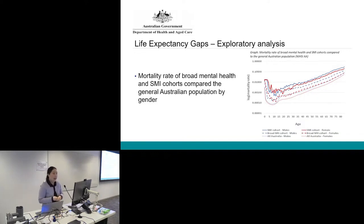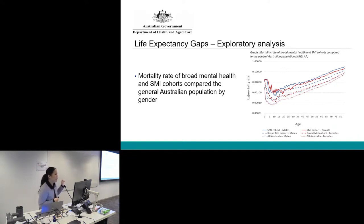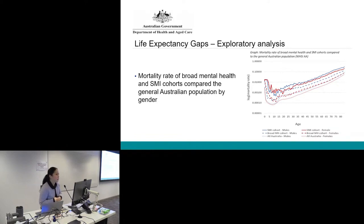The next slide is on age-specific mortality rates. In the graph, the solid blue and red lines are for the severe mental illness cohort split by gender. The larger dotted lines are the age-specific mortality rates for the broad mental health cohort, again split by gender. The smaller dotted lines represent the general Australian population. For every age, the severe mental illness cohort has a higher mortality rate than the broad mental health cohort, which in turn has a higher rate than the general Australian population.